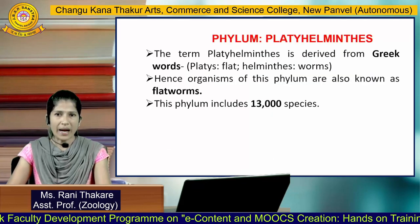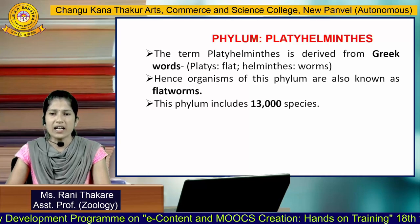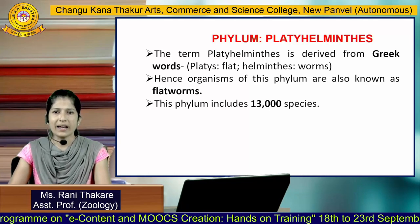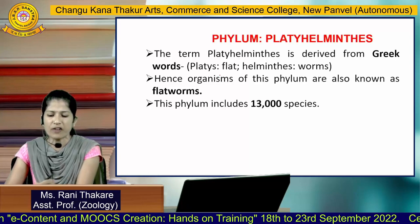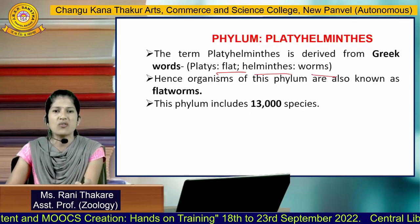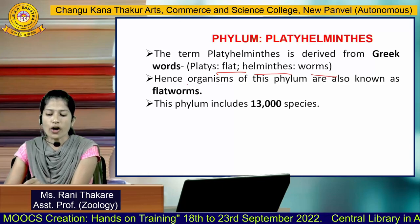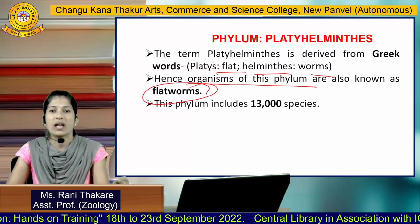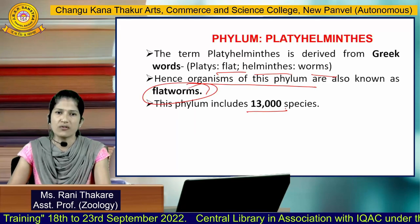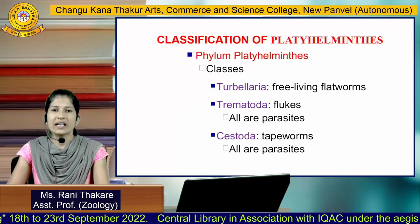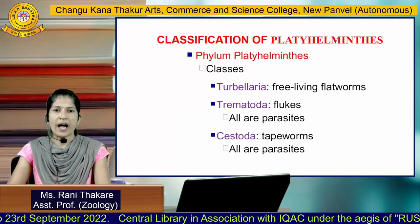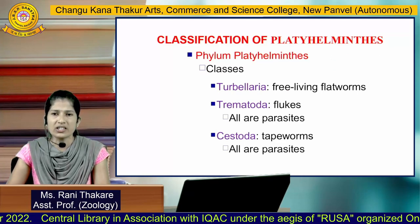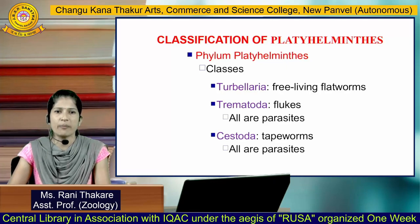Phylum Platyhelminthes — the term is derived from the Greek word where 'platy' means flat and 'helminthes' means worm. Organisms of this phylum are also known as flatworms. This phylum includes about 13,000 different species. Animals of this phylum are classified depending on whether they are free-living or parasitic, into three different classes.